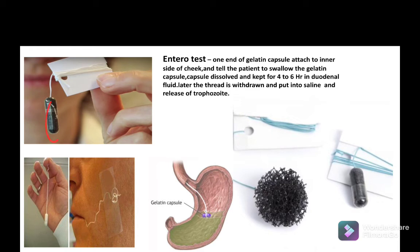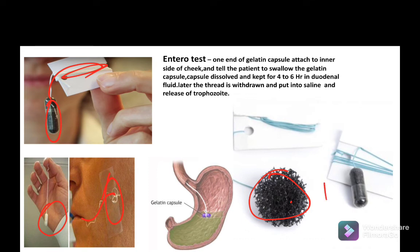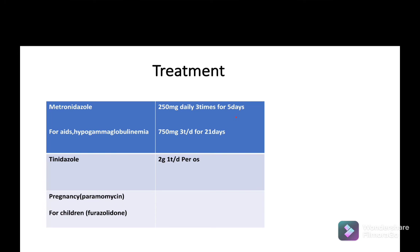The Entero-test (string test) uses a gelatin capsule containing a thread, with one end attached to the patient's cheek. The patient swallows the capsule and it is kept in the duodenum for four to six hours. The gelatin dissolves in the gastric and duodenal contents, allowing trophozoites to attach to the thread. After six hours, the thread is withdrawn, placed in saline solution, and the sediment is examined microscopically to detect trophozoite infections of Giardia lamblia.